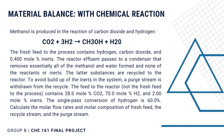The latter substances are recycled to the reactor. To avoid buildup of the inerts in the system, a purge stream is withdrawn from the recycle. The feed to the reactor — not the fresh feed to the process — contains 28% mole carbon dioxide, 70% mole hydrogen, and 2% mole inerts.